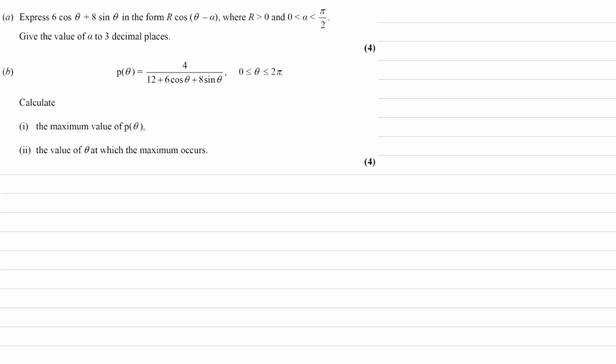Express 6 cos theta plus 8 sin theta in the form of r cos theta minus alpha. We want to give alpha to three decimal places.